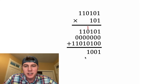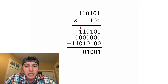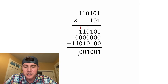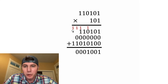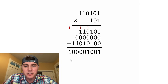1 plus 1 gives us 2, but once again that'll be a 0 with a 1 carried. 1 plus 1 would give us 2 again, so that'll be a 0 with a 1 carried. 1 plus 1 is another 0 with a 1 carried. 1 plus 1 is another 0 with a 1 carried. And now we have 1 plus nothing, which is 1.